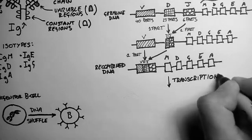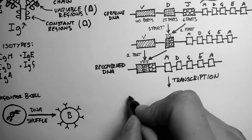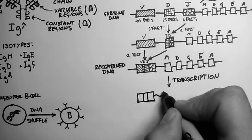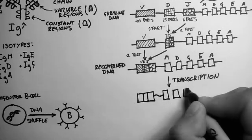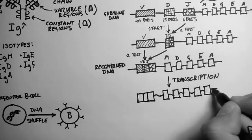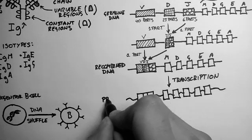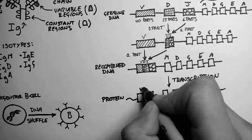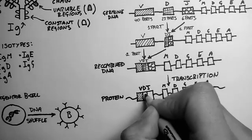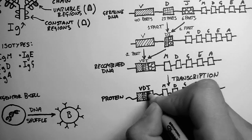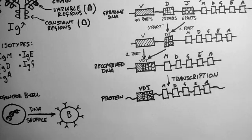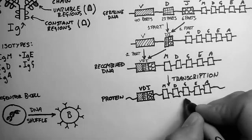Now this whole piece of DNA gets transcribed, so it becomes a string of mRNA. So here's a V-D and J region, with still all the constant regions on the end. But this is a string of mRNA now.